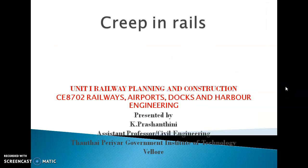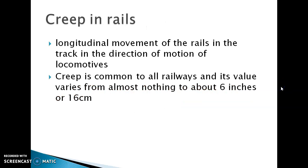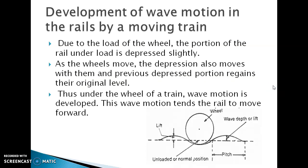Next, we will see creep in rails. The longitudinal movement of the rails in the track in the direction of motion of the locomotives is called creeping of rails. The amount of creep varies from 0 to 6 inches. We will see how wave motion is created in the rails.